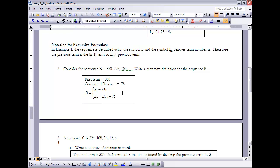So to write it, I'm going to start by writing the first term, which is 850, and it has a constant difference of negative 75. So my B sub 1 is going to be equal to 850, and B sub n is equal to whatever the previous term is—which, remember, I'm going to write as B sub n minus 1—and then I'm going to subtract 75 from it. So this would represent that definition.